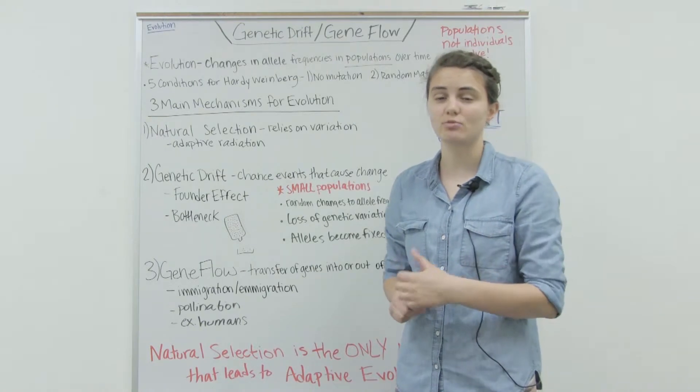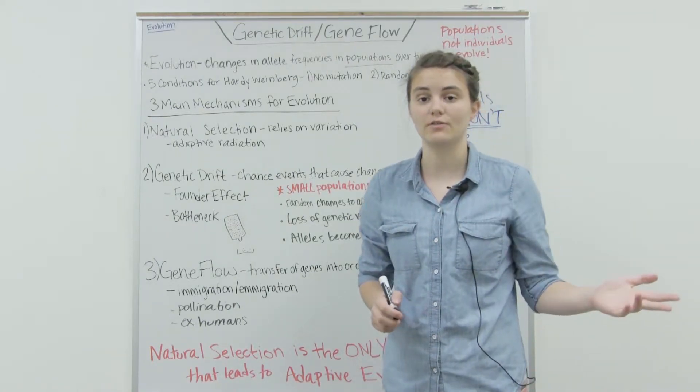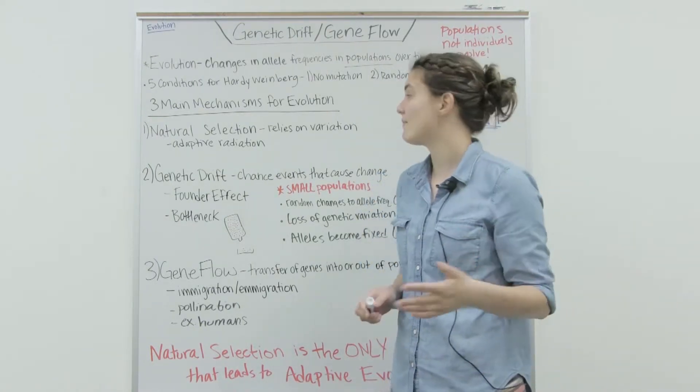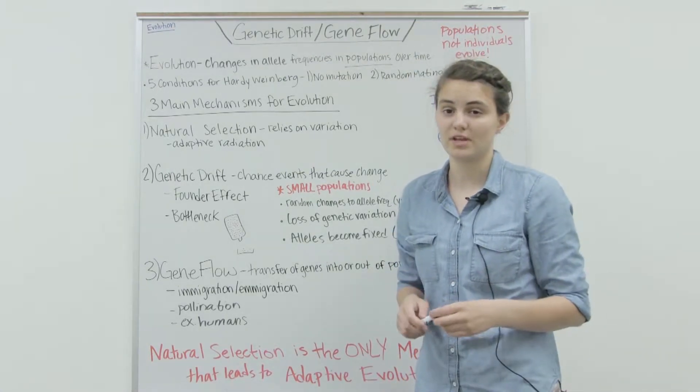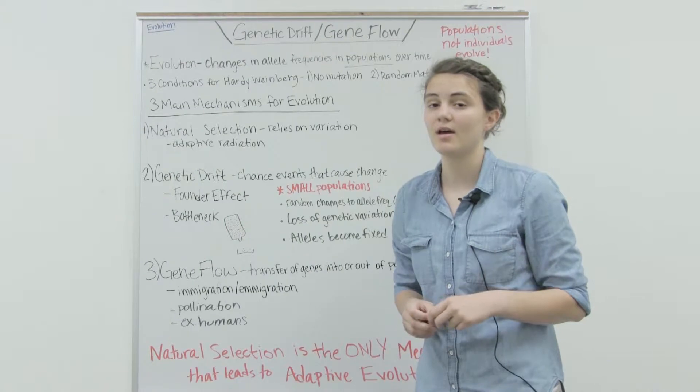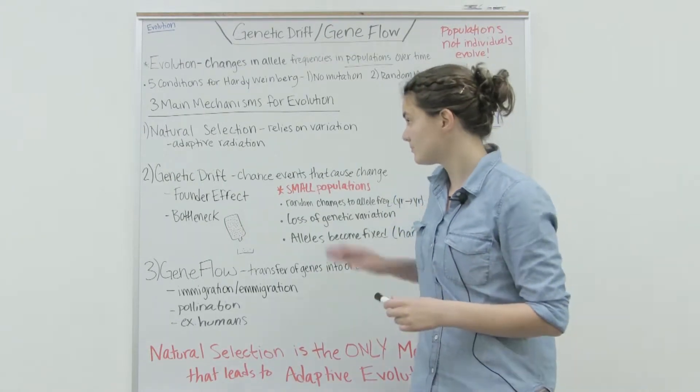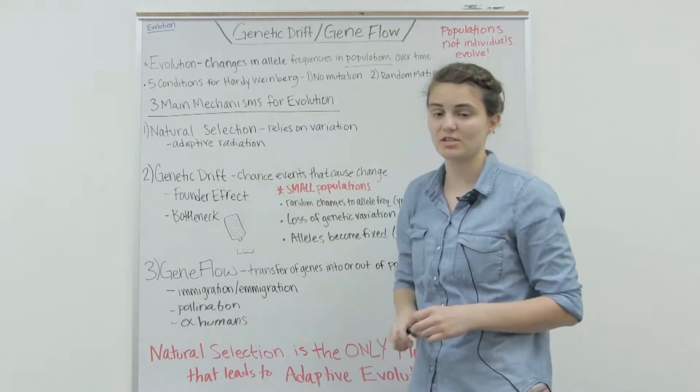Individuals that don't have those traits are more likely to die and not pass on their traits. Over time, the majority of the population will begin to have those beneficial traits because the individuals that didn't have them died off. It's adaptation to the environment.